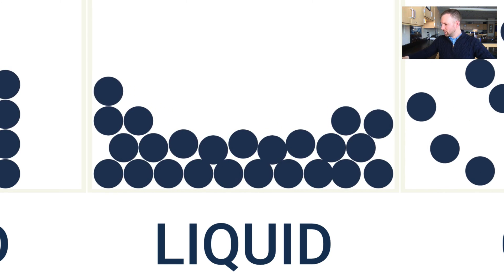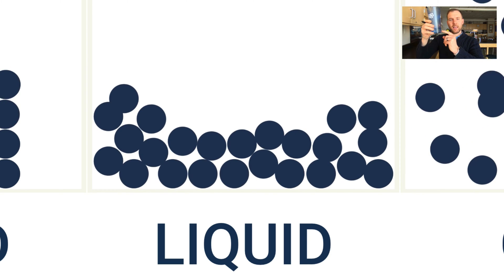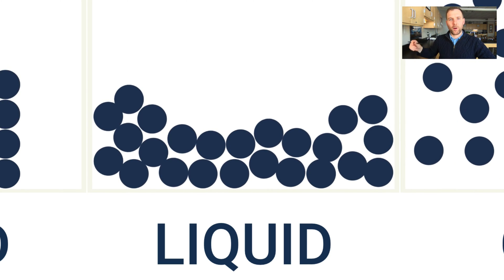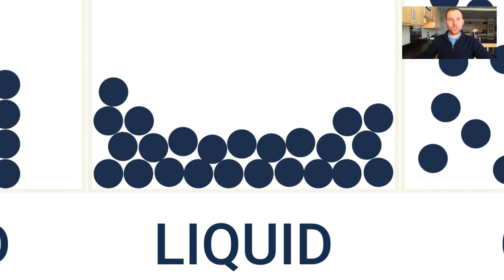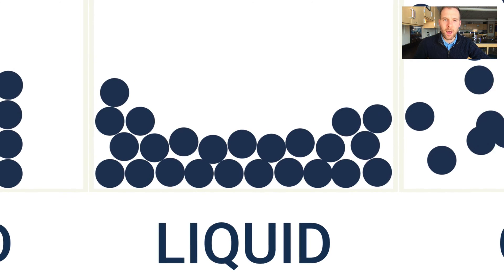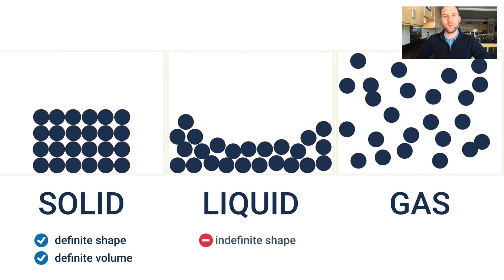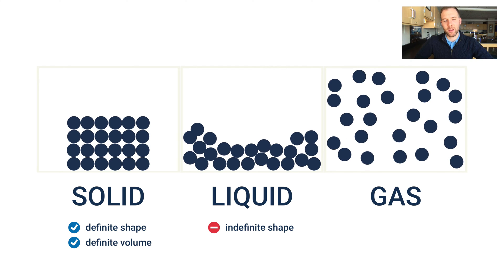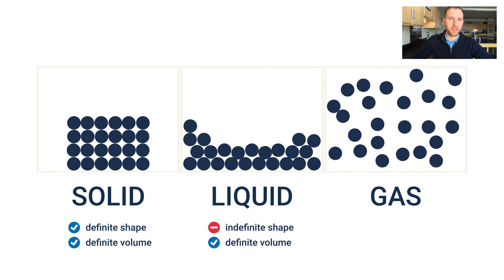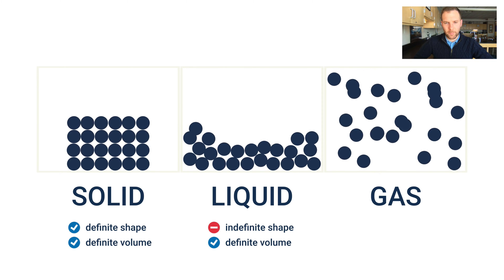If you were to take a beaker of water—actually I've got a cup of water here—if I was to take this and pour this into a small graduated cylinder, it wouldn't be keeping this same shape here. It'd be taking the shape of the new container it's in. What it would keep though is its volume. So it's not going to have a definite shape—we'd call that an indefinite shape—but it still does have a definite volume. Notice that the particles in a liquid flow around each other a little bit more.